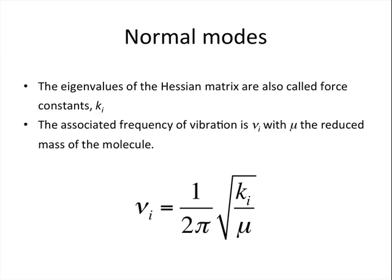The eigenvalues of the Hessian matrix are also called force constants, indicated here as Ki. This is because they regulate the vibration of a molecule, like a spring,